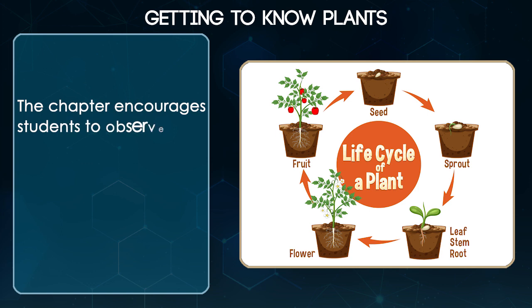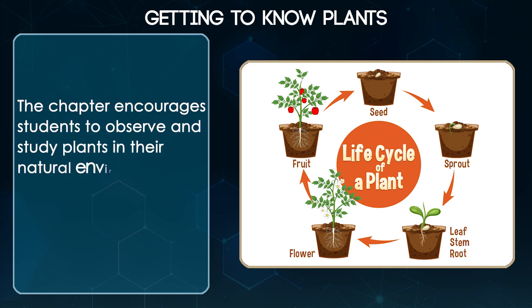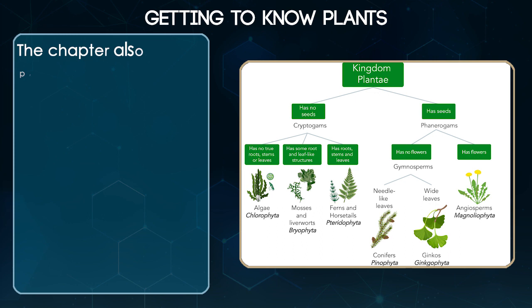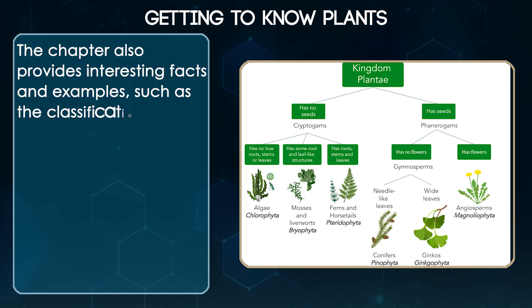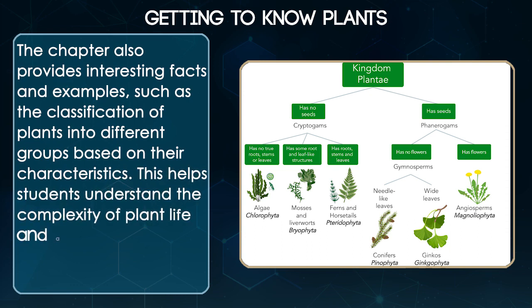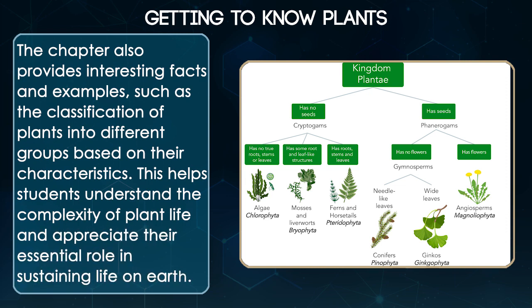The chapter encourages students to observe and study plants in their natural environment, fostering an appreciation for the diversity of plant life. It also provides interesting facts and examples such as the classification of plants into different groups based on their characteristics. This helps students understand the complexity of plant life and appreciate their essential role in sustaining life on earth.